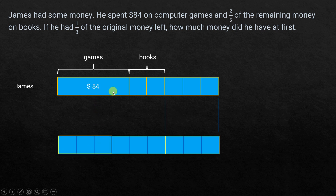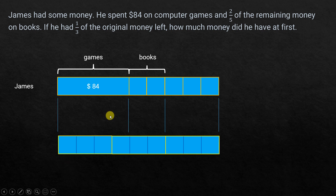Now when we take a look at it, we already have five units accounted for here — one, two, three, four, five. So what we have left other than those five is one, two, three, four units. That exactly corresponds to the $84.